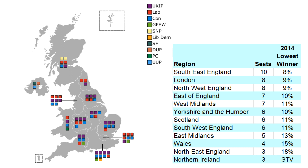If you're in the region with ten seats and you want to vote for a party that's going to get at least one-tenth of the votes, then that's okay — you're safe, you can go ahead and vote for your favorite party and they'll get a seat and your vote will count. By the way, I'm talking about Great Britain, not Northern Ireland — Northern Ireland has voting a little bit different.